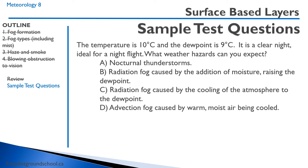The temperature is 10 degrees Celsius, the dew point is nine. It is a clear night ideal for night flight. What weather hazards can you expect? The temperature dew point spread is only one degree and it's a clear night, so we know the earth's heat will radiate out and the temperature will drop. When the temperature hits nine degrees and the dew point is nine degrees, the air will be saturated and the water vapor will condense. We will end up with radiation fog.